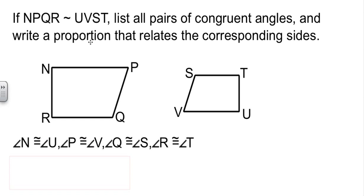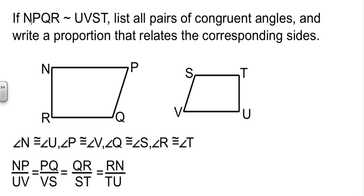The proportion of sides is easy enough to do, too. NP matches UV. PQ matches VS. QR matches ST. And then RN matches TU. So those are the four pieces that go in the proportion.